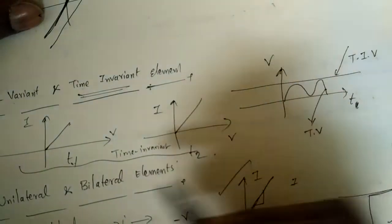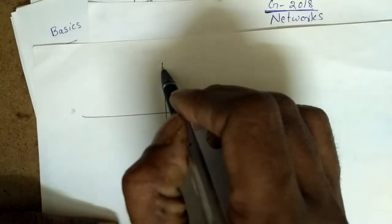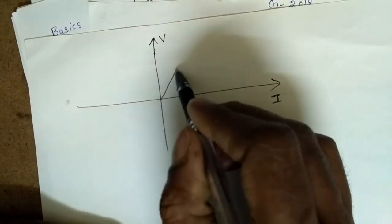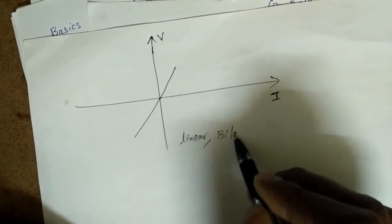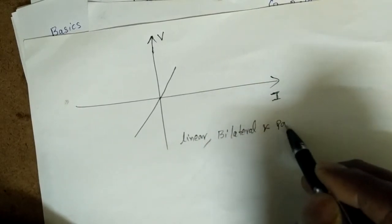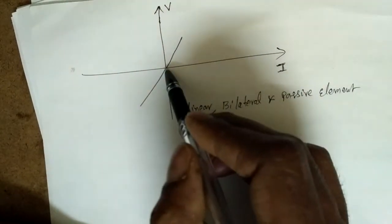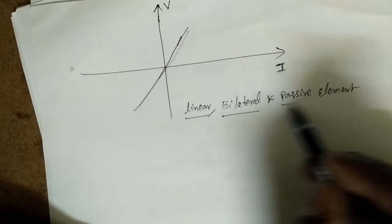Previous GATE exams have asked students to identify element characteristics from IV graphs. For example, if the IV characteristic is a straight line passing through the origin and symmetric in the first and third quadrants, it is linear, bilateral, and passive — since the slope is positive in all directions.